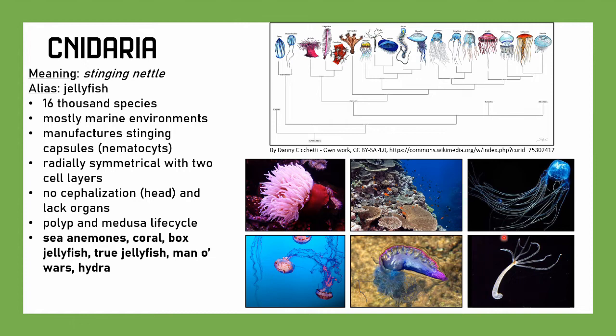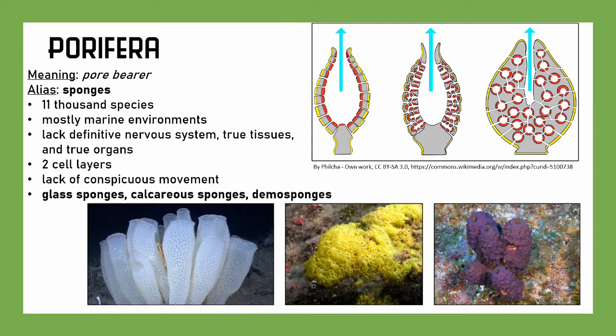Keeping the theme of simplicity, we have Porifera, meaning 'pore bearer,' most commonly known as sponges. There are 11,000 species, mostly marine with a couple of freshwater. They lack definitive nervous systems, true tissues, and true organs — these are among the simplest animals. Like cnidaria, they have two cell layers, and a notable feature is their lack of conspicuous movement. They are essentially filter feeders. The major groupings are glass sponges, calcareous sponges, and the dominant demosponges — most sponges you see on a coral reef are probably demosponges.